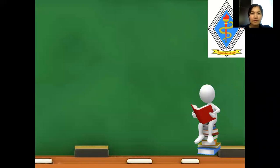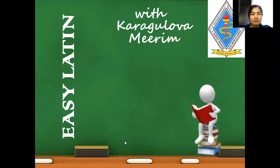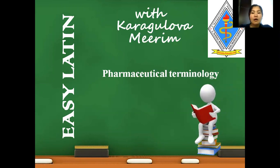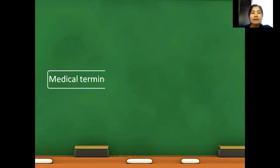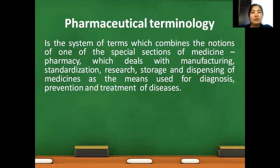So let's start our Latin lesson, and today we are discussing pharmaceutical terminology. You will know that medical terminology is divided into three parts: anatomical terminology, clinical terminology, and pharmaceutical terminology. And today we are discussing pharmaceutical terminology. Pharmaceutical terminology is a system of terms which combines the notions of one of the special sections of medicine — pharmacy.